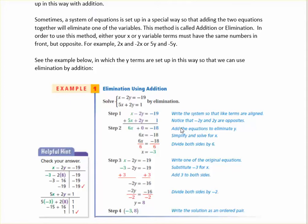In this example, it says x minus 2y equals negative 19, and 5x plus 2y equals 1. By 'set up for elimination,' I am looking at the fact that one term has a minus 2y and one term has a plus 2y. If it's set up like this, then all you have to do is add the equations together and one of the variables will eliminate — which is why it's often called elimination.